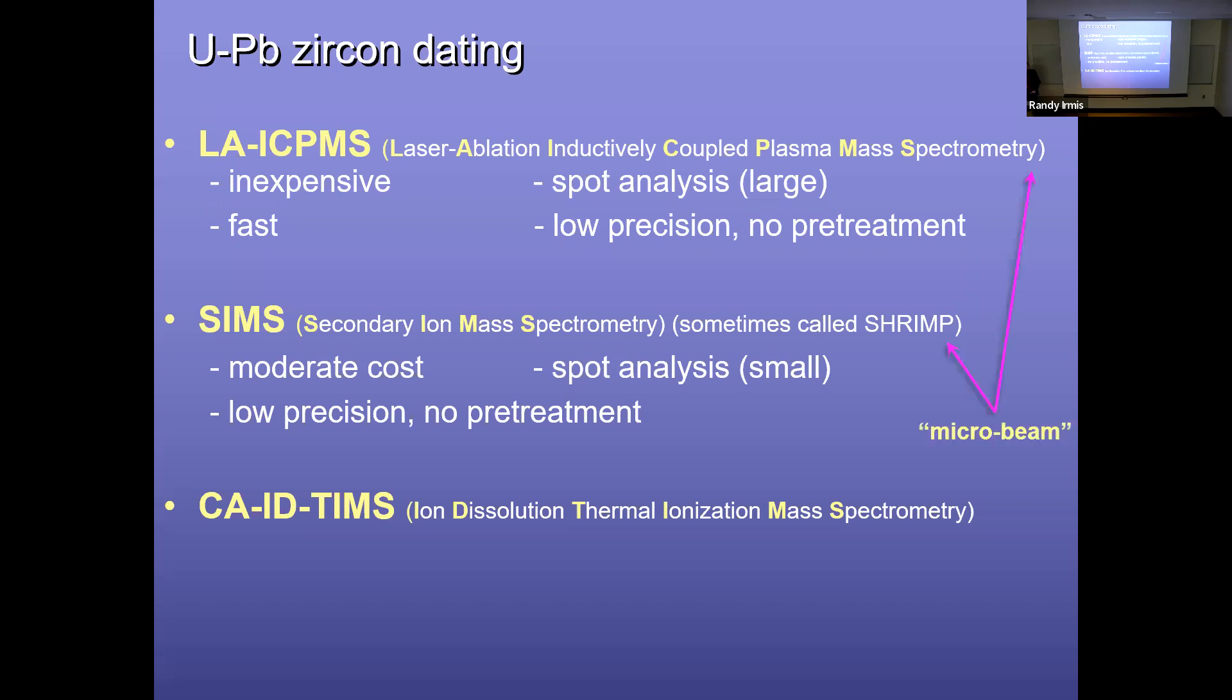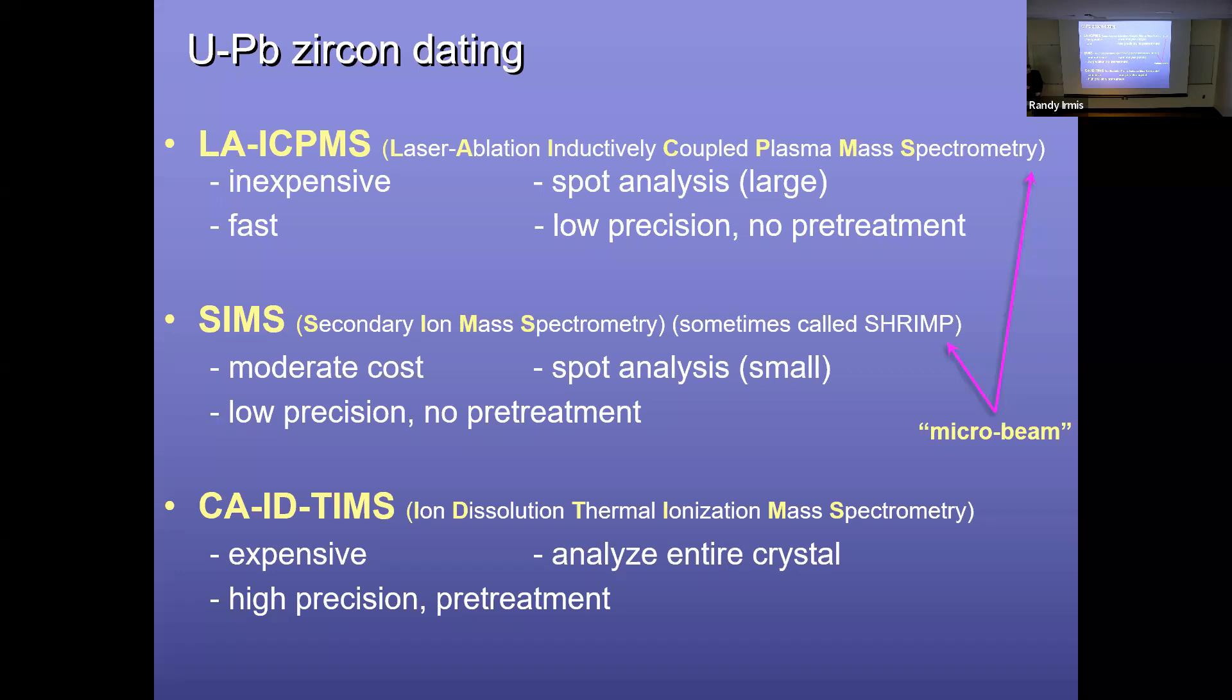And both of these are what we can call microbeam techniques. They use some sort of beam to ionize a small part of the crystal. In contrast, thermal ionization mass spectrometry is much more expensive, unfortunately. And it analyzes the entire crystal, but it has a much higher precision, and it uses pretreatment. And so there's pluses and minuses to each of these, but we have to keep them in mind also once when we have ages from these different techniques and we're interpreting them in a geologic context.